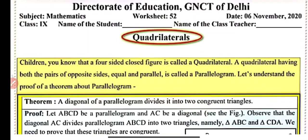Hi everyone, welcome back to my YouTube channel NCRT Math Sir. Today in this video we will do worksheet number 52 for class 9, subject mathematics. Our topic is quadrilaterals. There are many quadrilaterals such as rectangle, square, parallelogram, rhombus, trapezium, kite and many more. Today our concern is about parallelogram.